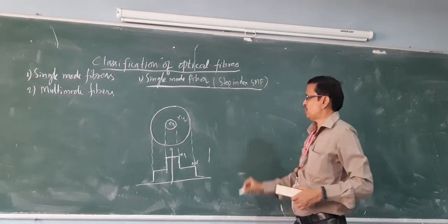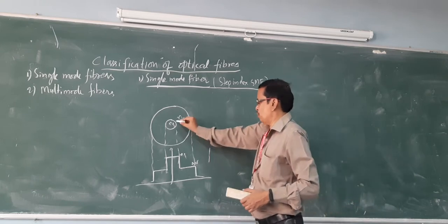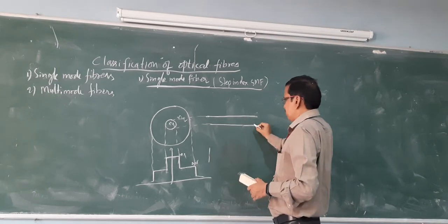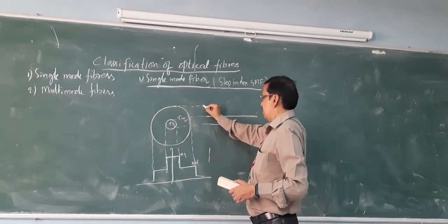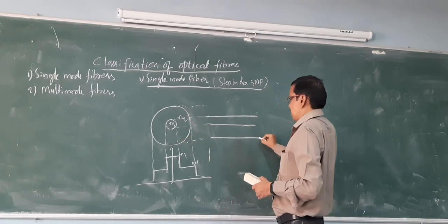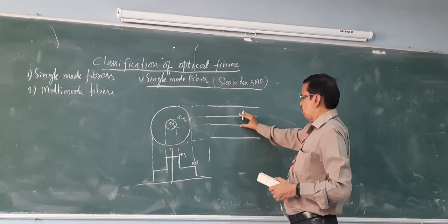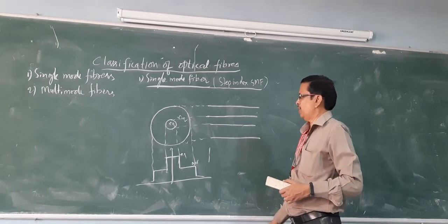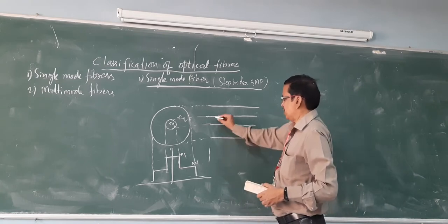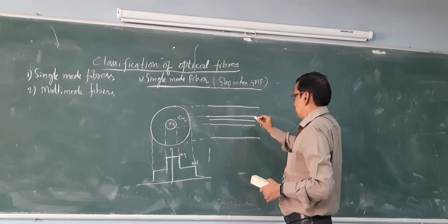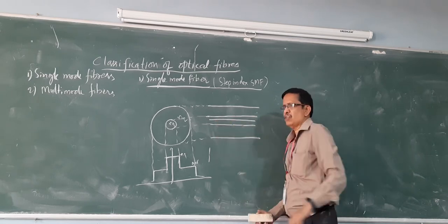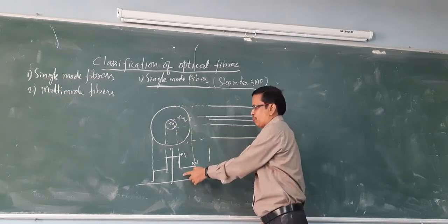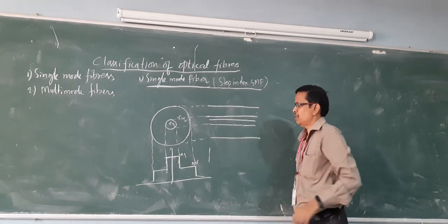Now we will see the side view of this fiber. The core region and cladding region are shown. Here I will show the single mode of propagation that is along the axis of the core region. This is the mode of propagation in the single-mode fiber. Like this we can denote the cross-section, the index profile, and the side view of the fiber.